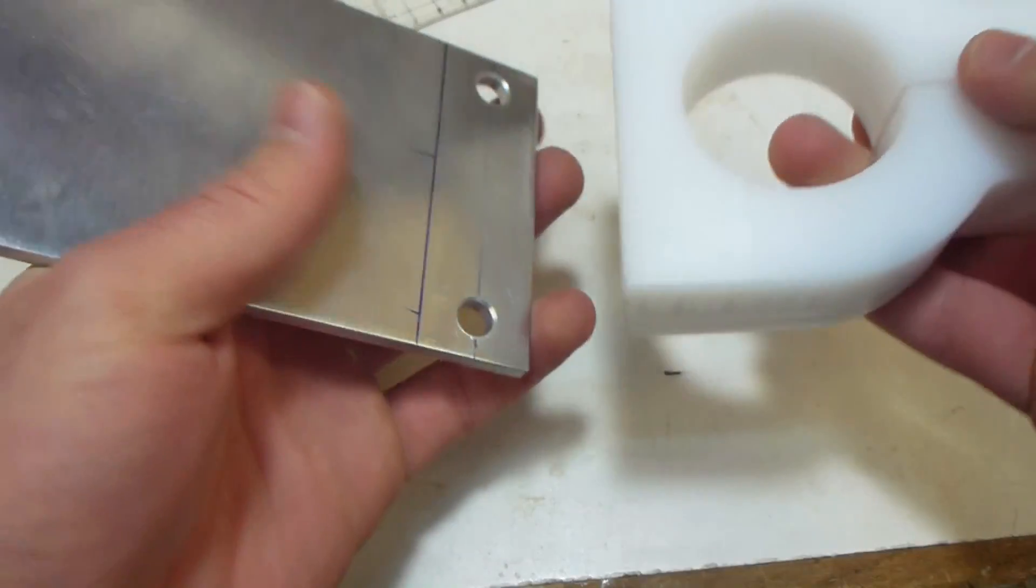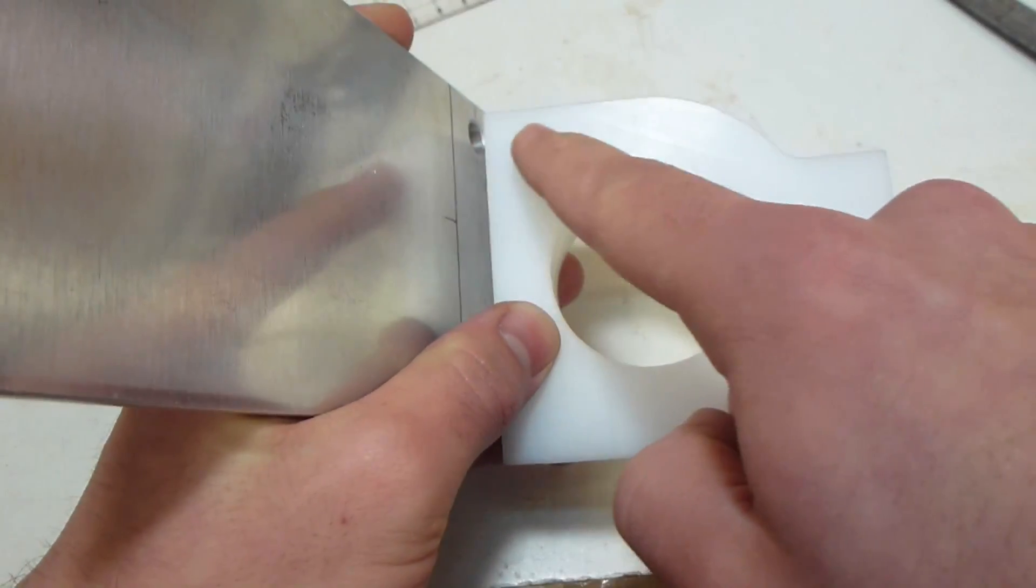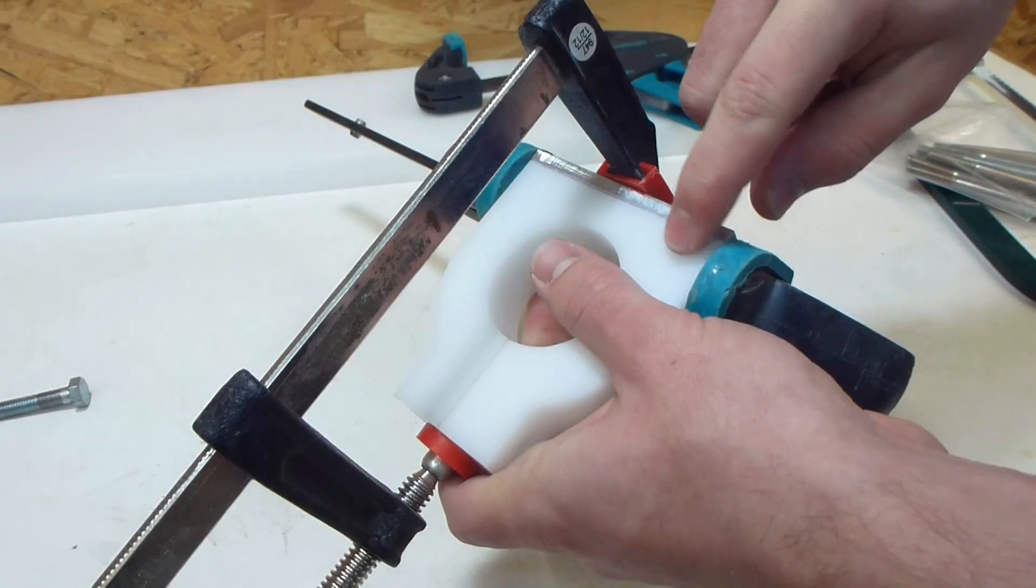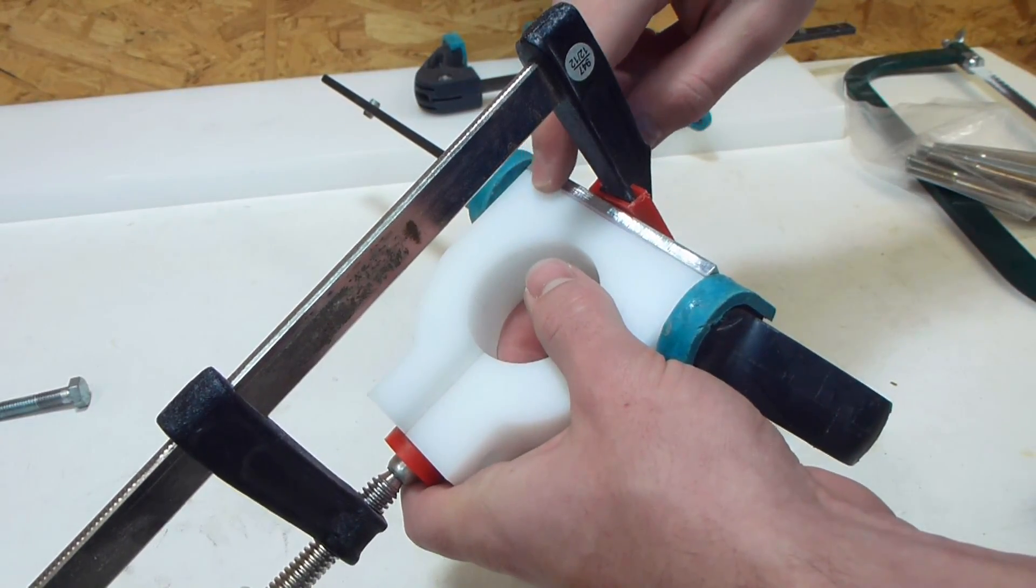Both holes are drilled and countersunk. Next I need to make the holes with threads into the plastic. I made sure everything lines up and then used the same drill bit to locate the hole.